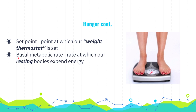There's another way our bodies regulate weight: by setting our basal metabolic rate, which is the rate at which resting bodies expend energy. For example, if someone receives 50% less food for three weeks straight, their basal metabolic rate might drop by as much as 30%.